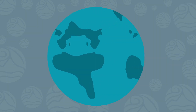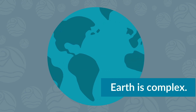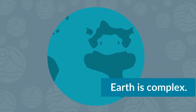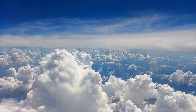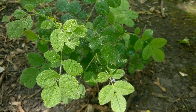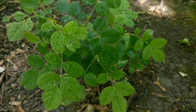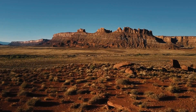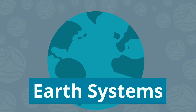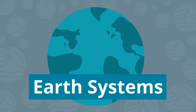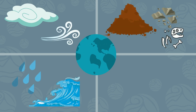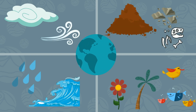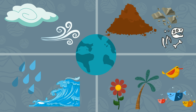The earth is a large complex planet made up of many different systems that interact in countless ways. Scientists divide our complicated earth up into simpler processes so they can be studied more easily, and this concept is called earth systems. Though separating our earth processes can help us understand them, in reality these systems remain interconnected with one another.